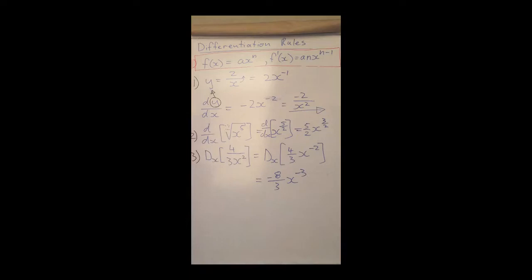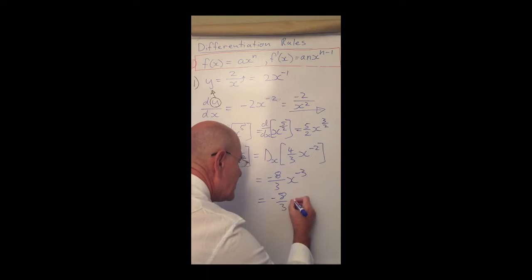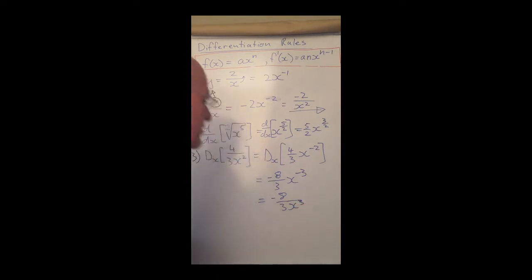Let's rewrite this a little bit better so that we don't have negative exponents. That is equal to minus 8 over 3, take the x down, x to the power of 3.